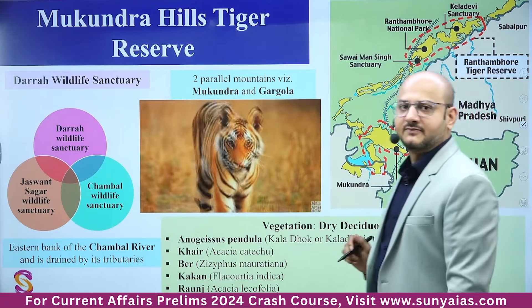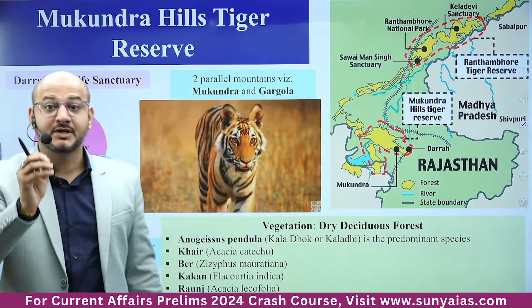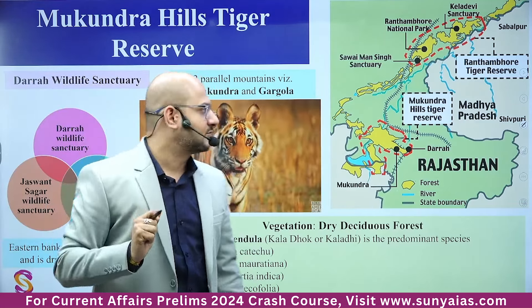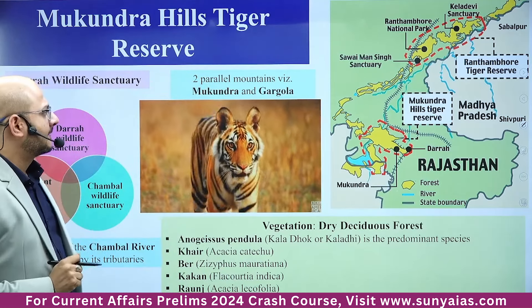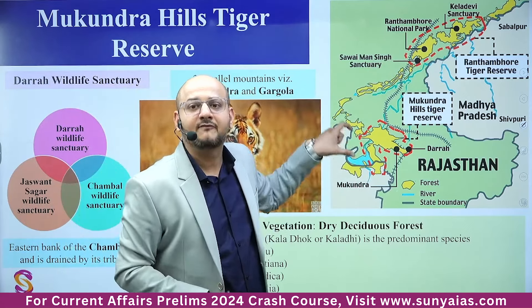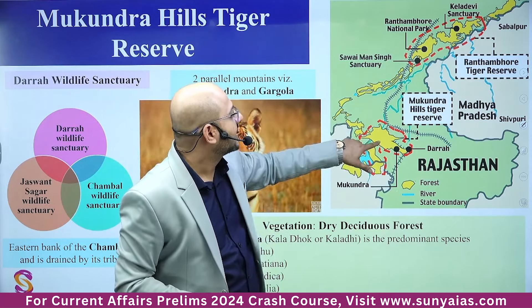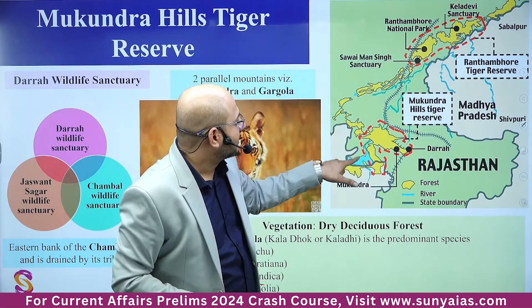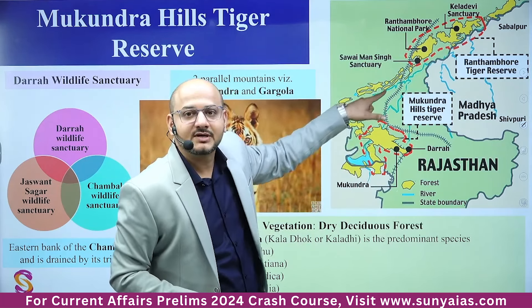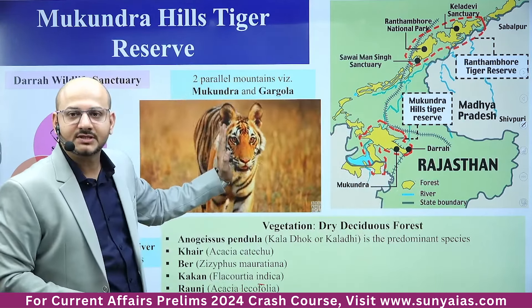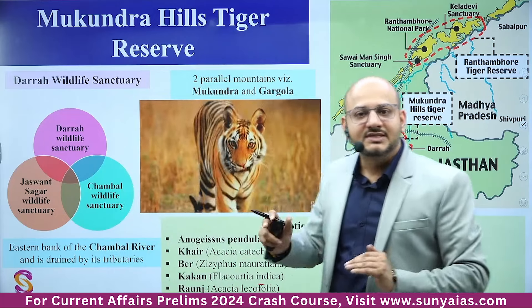The next topic is Mukundra Hills Tiger Reserve. Tiger reserves are very important for UPSC — they have asked about Pakke Tiger Reserve just by location in the 2017 Prelims. Looking at the map of Rajasthan, yellow patches represent forest areas. Ranthambore Tiger Reserve and Kela Devi Sanctuary are there. The Chambal River rises from this region, and Mukundra Hills Tiger Reserve is on the eastern bank of the Chambal River.